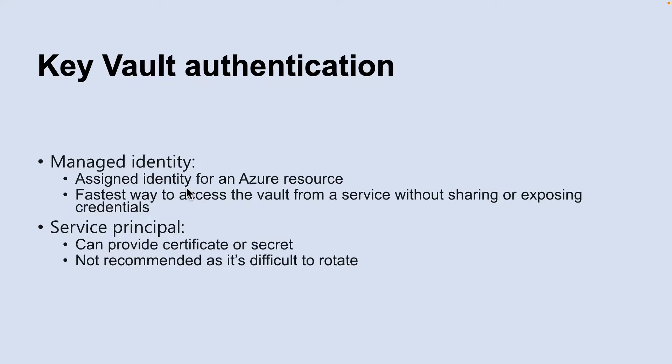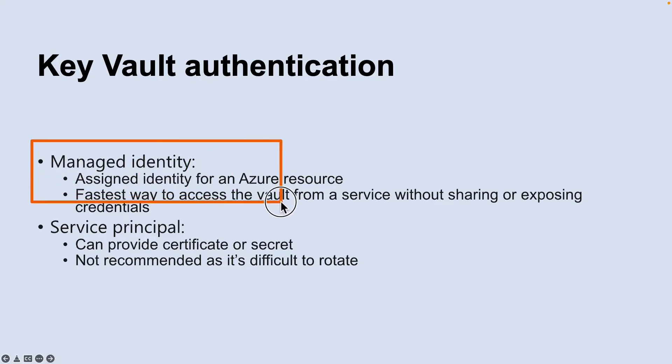So how do you perform authentication in Key Vault? To perform any operations with Key Vault you first need to authenticate to it. There are primarily three ways to authenticate: the first one is using managed identity, then service principal and certificate, and then service principal and secret.